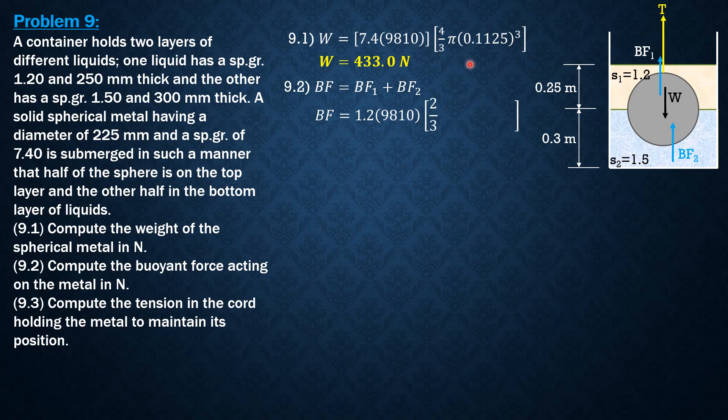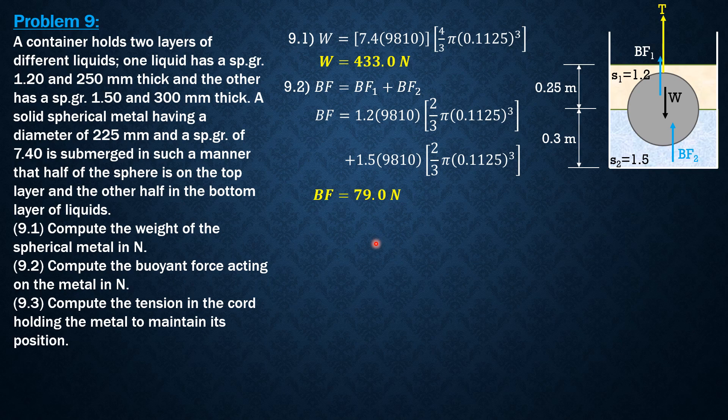That's BF1 plus 1.5 times 9.810 times 2/3 π times 0.1125³. Combining these two terms using the calculator, BF is 79 newtons. Finally, for the third part, compute the tension in the cord holding the metal to maintain its position.